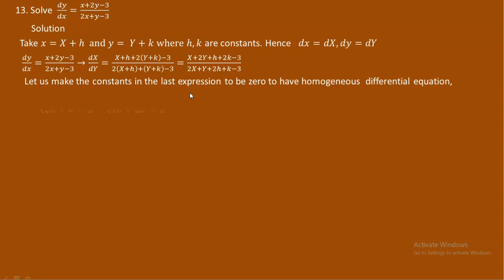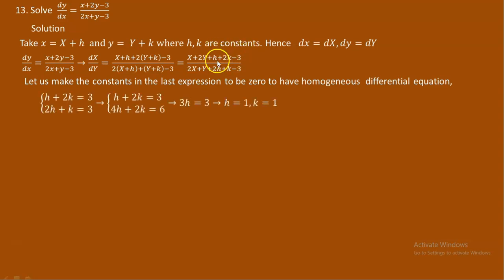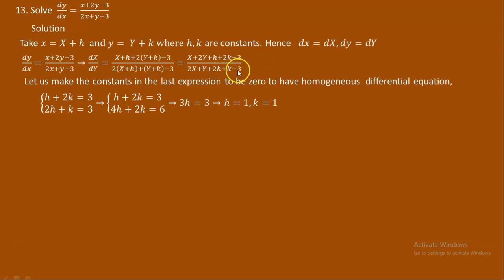We make h plus 2k minus 3 equal to zero, so h plus 2k equals 3. And 2h plus k minus 3 equals zero, so 2h plus k equals 3. If we determine h and k such that these two equations are satisfied, the constants can be eliminated and the non-homogeneous equation will change to homogeneous form.